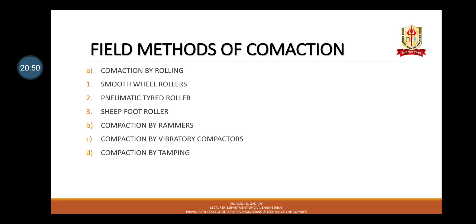Next are field methods of compaction. Various methods are used for compaction of soil in the field. The choice of method depends on the nature of soil, thickness of layer, maximum dry density, and economic considerations. Field compaction is carried out by four methods: compaction by rolling, compaction by rammer, compaction by vibratory compactor, and compaction by tamping. Starting with compaction by rolling — rollers of different types are used for compaction of soil. The compaction by rollers depends on factors such as contact pressure, number of passes, layer thickness, and speed of roller.